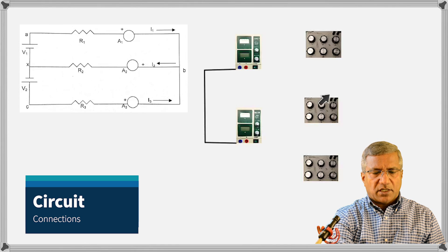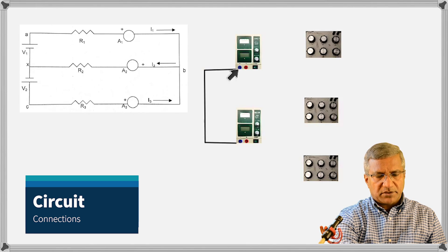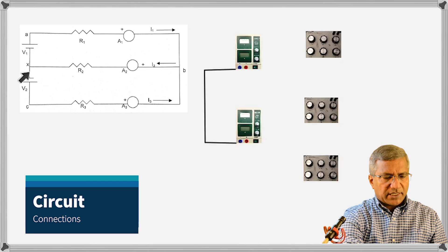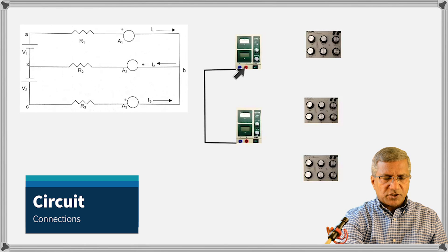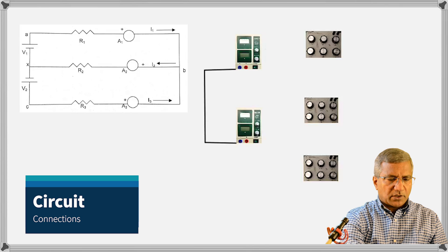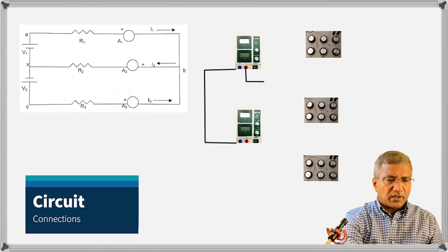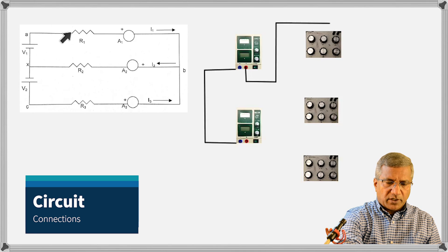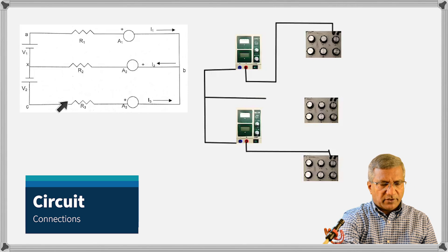So that's R1, R2, and R3. Now I'm going to connect it. The two negatives of the sources are connected together — that's the cable I'm using here. Then from the positive of V1, it's connected to one end of R1. And then the positive of the other source is connected to one end of R2, and this common is connected to R2.